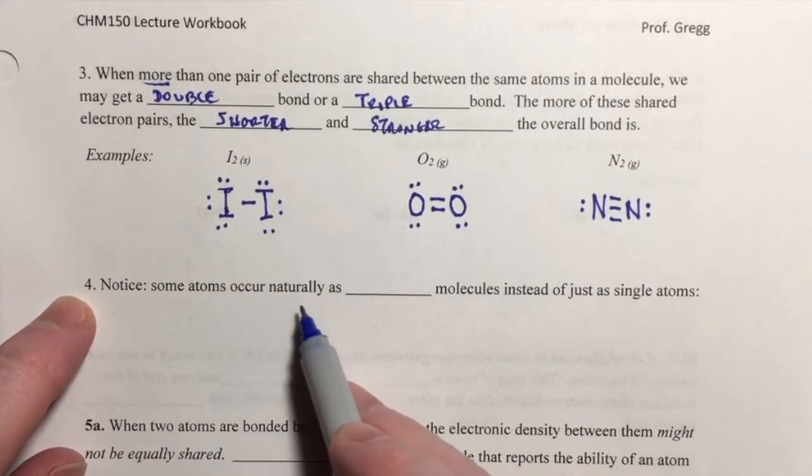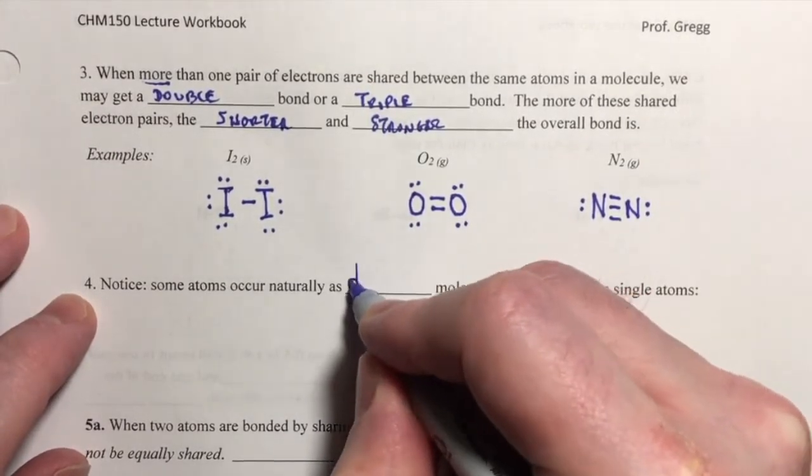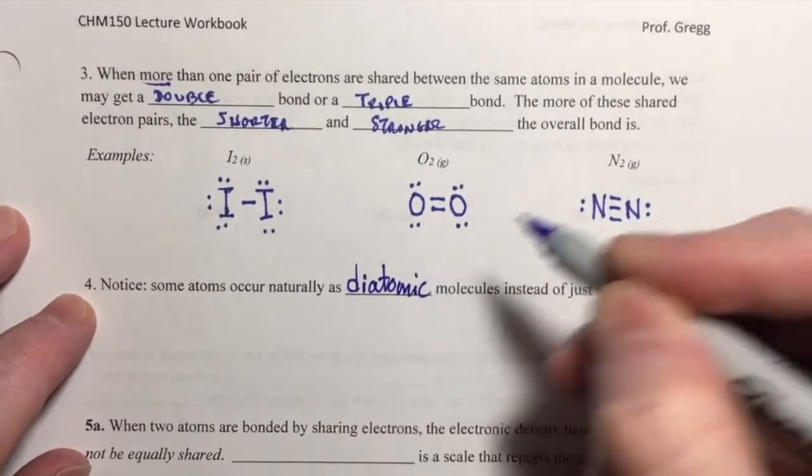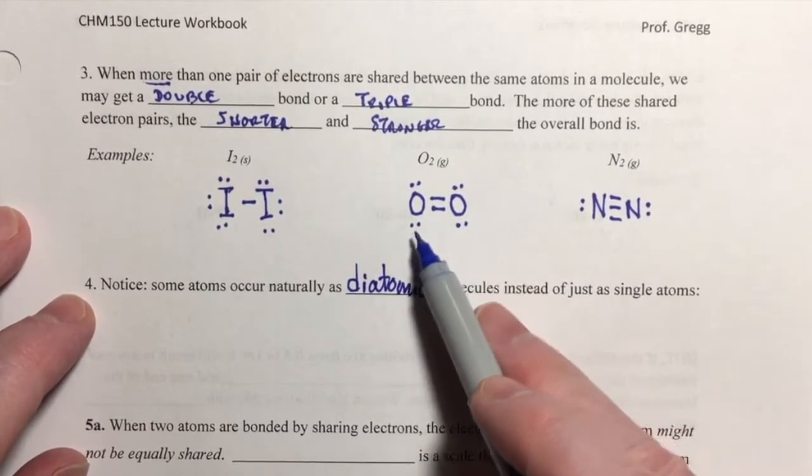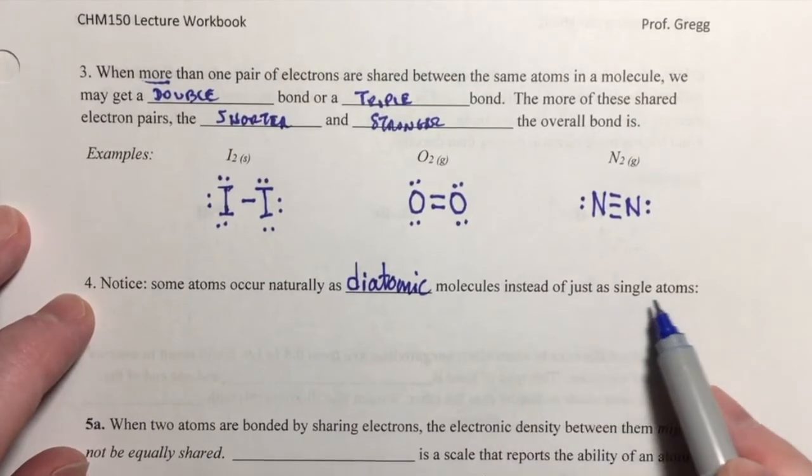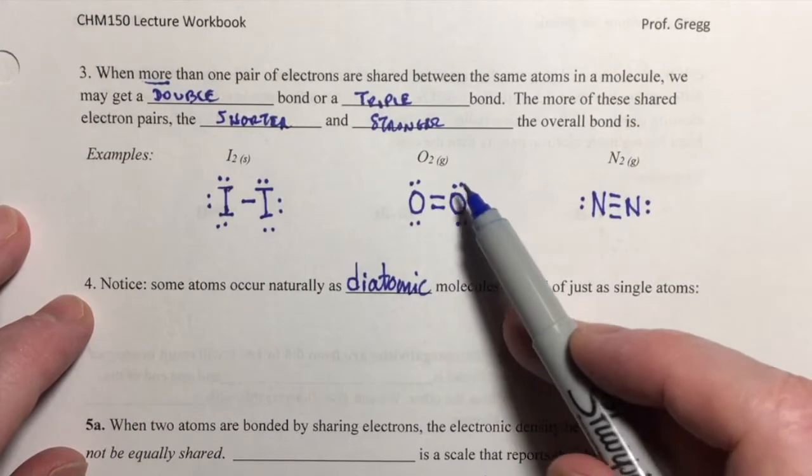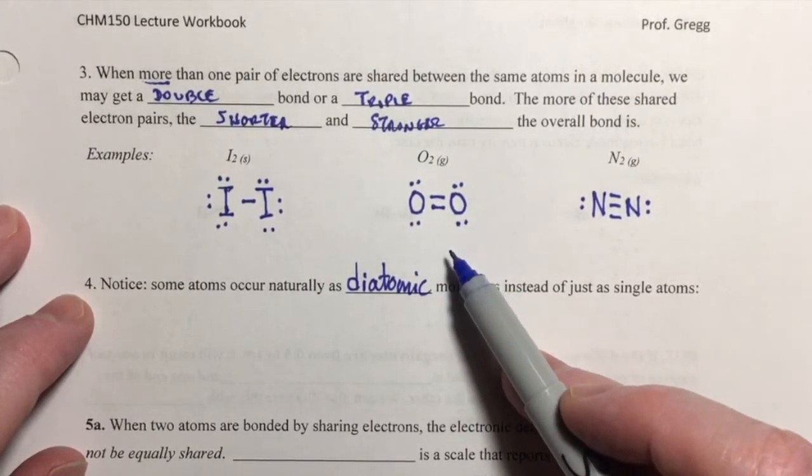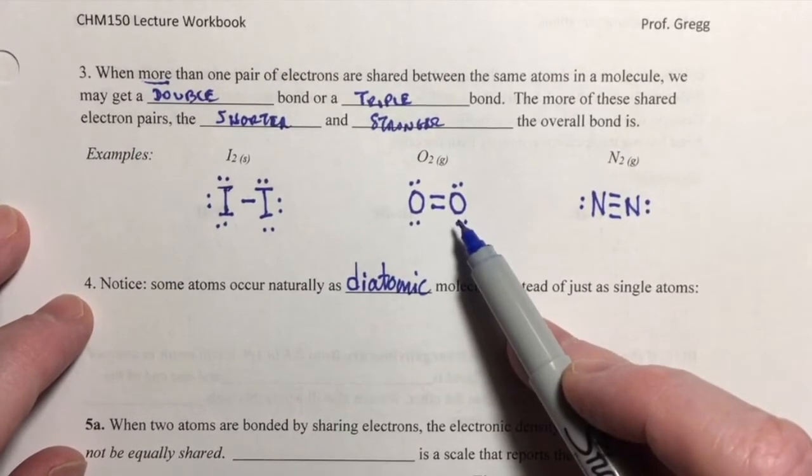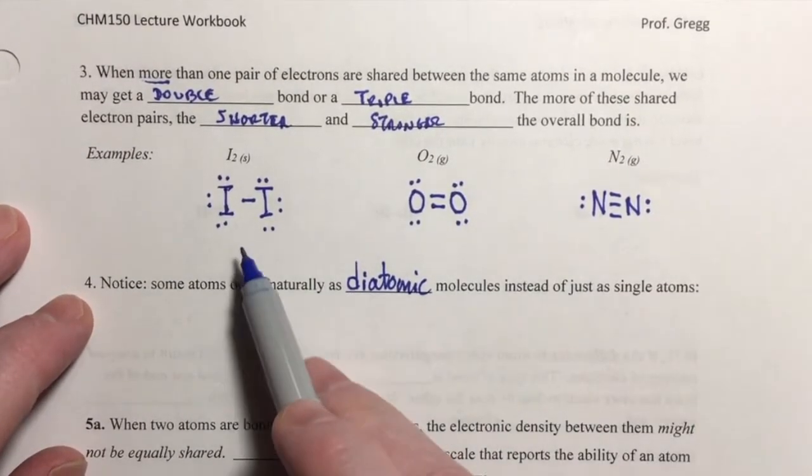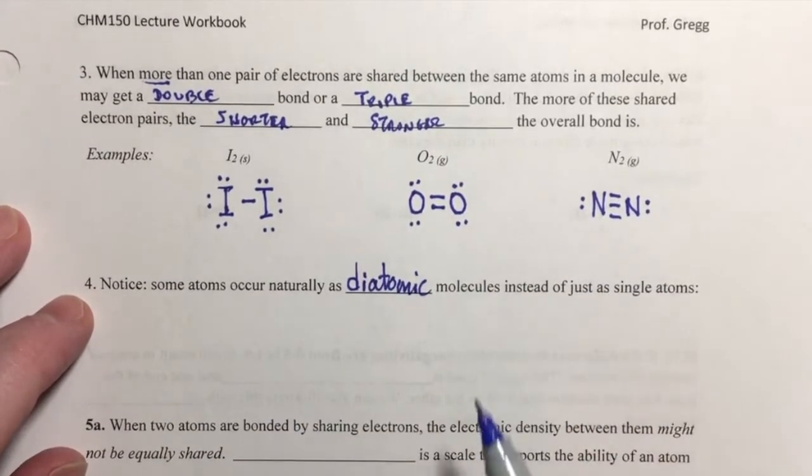I'd like to take a moment to talk about that. Notice some atoms occur in nature. They're more stable as diatomic molecules, so they occur in two atoms paired up in a covalent species instead of just as a single atom. When you breathe in oxygen, this is what you're breathing in. You're not breathing in a single oxygen atom, you're breathing in a pair of them bonded covalently.